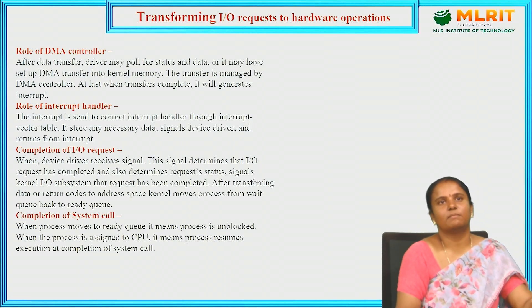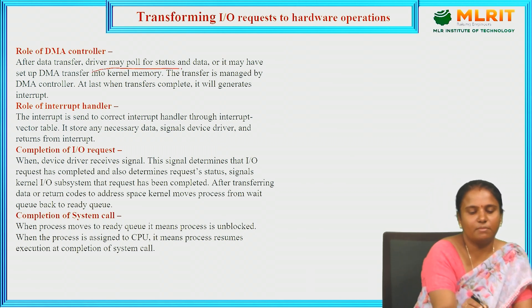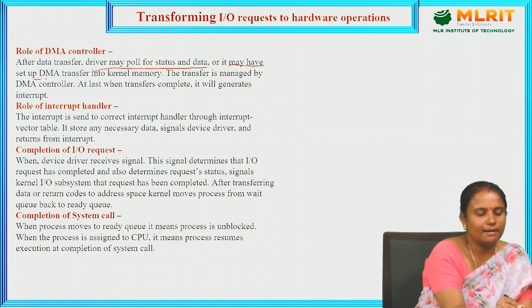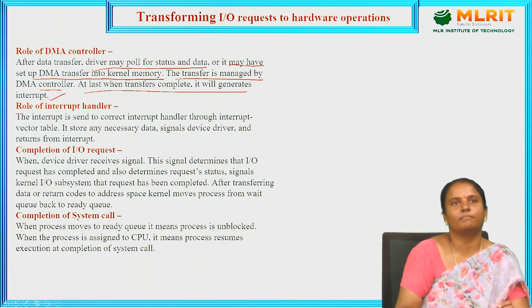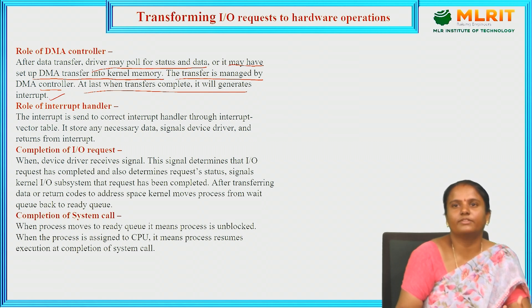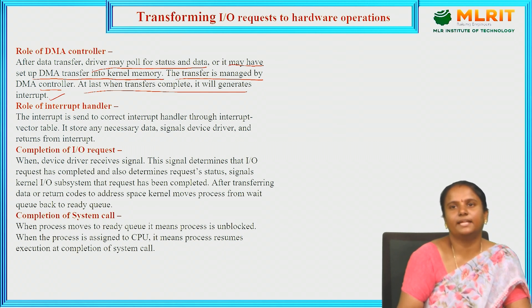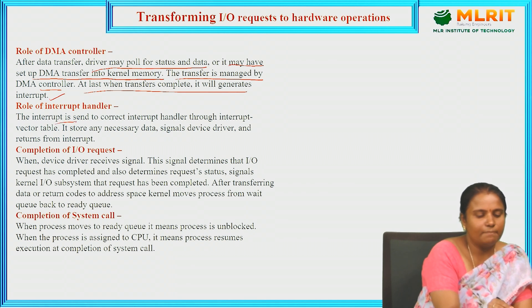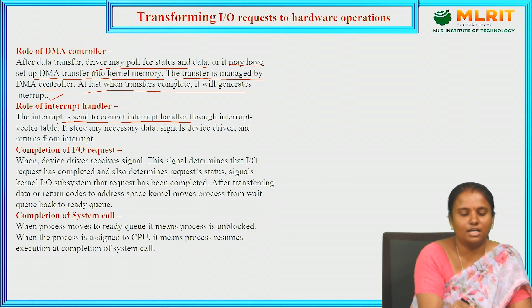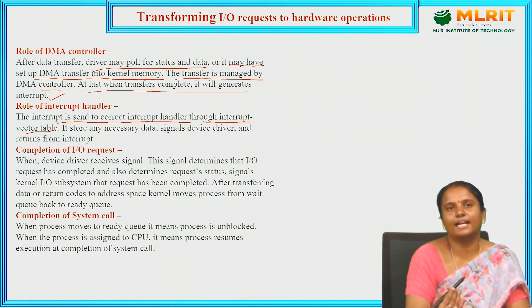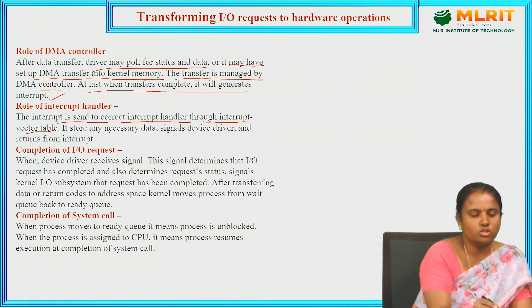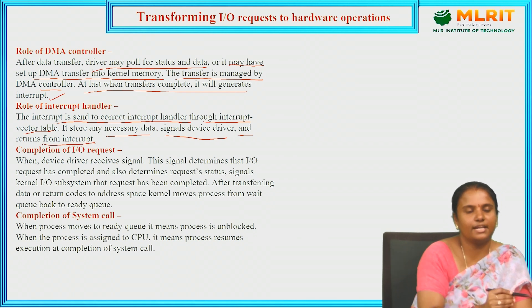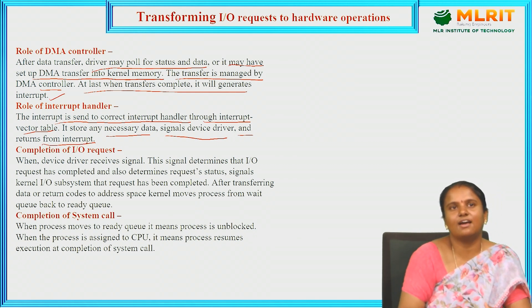Regarding the role of the Direct Memory Access controller: after data transfer, the driver may poll for status and data, or it may set up a DMA transfer into kernel memory. This transfer is managed by the DMA controller. Finally, it generates interrupts. The interrupt is sent to the correct interrupt handler through the interrupt vector table. It stores any necessary data, signals the device, and returns from the interrupt.